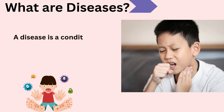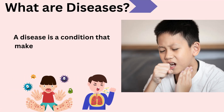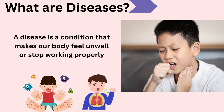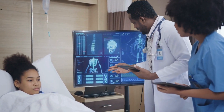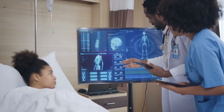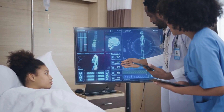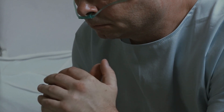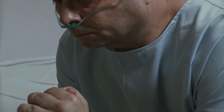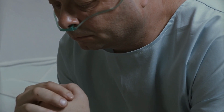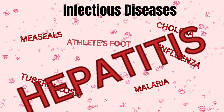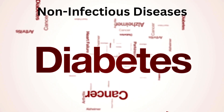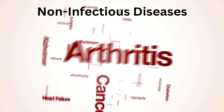What are diseases? A disease is a condition that makes our body feel unwell or stop working properly. Have you ever wondered why we sometimes get sick? Not all diseases are the same. Some can spread from one person to another, while others cannot. There are two main types of diseases: infectious diseases and non-infectious diseases.